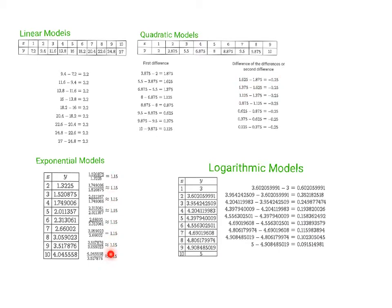If you do it twice and it's different, then try taking the ratio — dividing the second y term by the first y term, then the third y term by the second y term. When you divide and get the same answer across all the ratios — which, when you're rounding, that's pretty good — that means it's exponential.